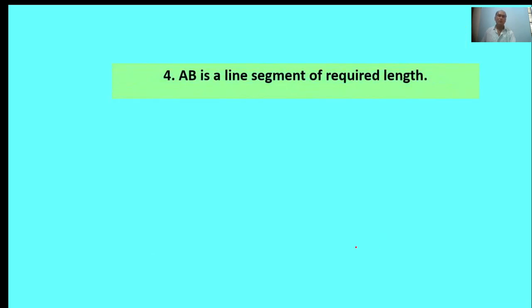Fourth: AB is a line segment of required length. AB is a line segment. This is called 4.7 centimeters required length line.